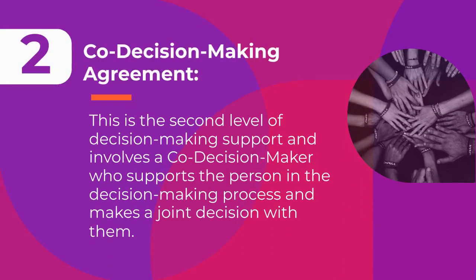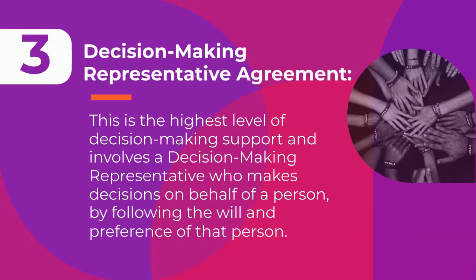2) Co-Decision Making Agreement — this is the second level of decision-making support and involves a co-decision maker who supports the person in the decision-making process and makes a joint decision with them. 3) Decision Making Representative Agreement — this is the highest level of decision-making support and involves a decision-making representative who makes decisions on behalf of a person by following the will and preference of that person.